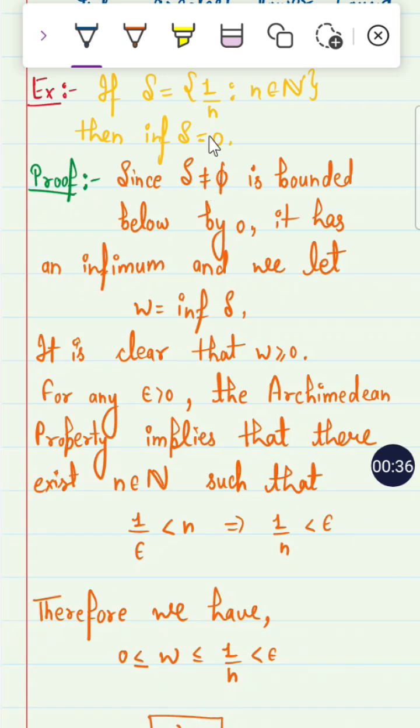The proof is that S is not equal to phi (empty set). That is true. Because if you take N equals to 1 then it is 1, 1 by 2, 1 by 3, 1 by 4. So S is not equal to phi.